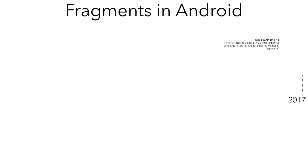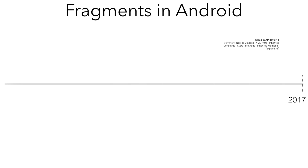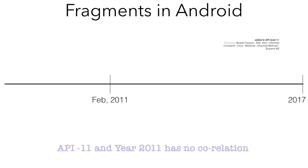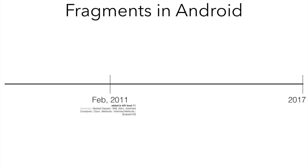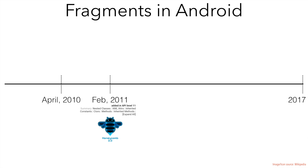We are right now in 2017, and it was way back in February of 2011 that API 11 was introduced. If you are wondering what API 11 is, it is Honeycomb. And there is a reason for that. Exactly one year before, in April of 2010, iOS had come up with version 3.0.